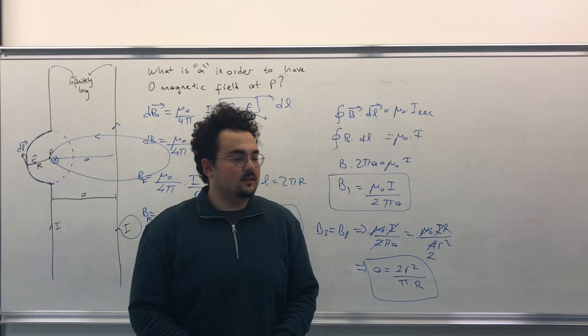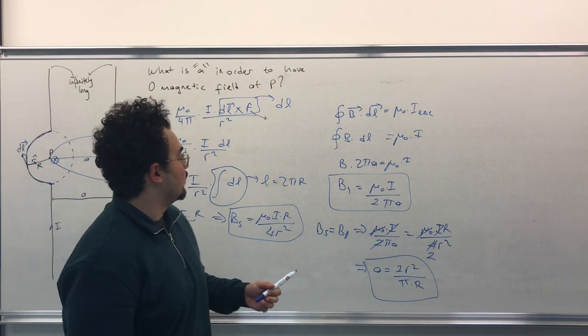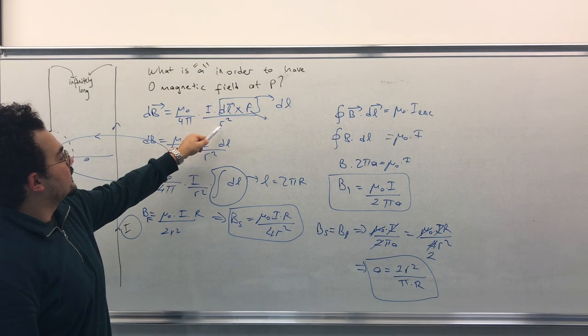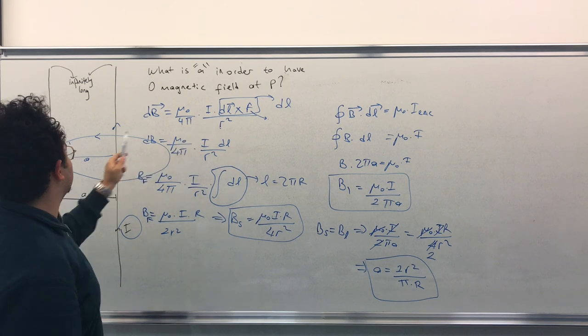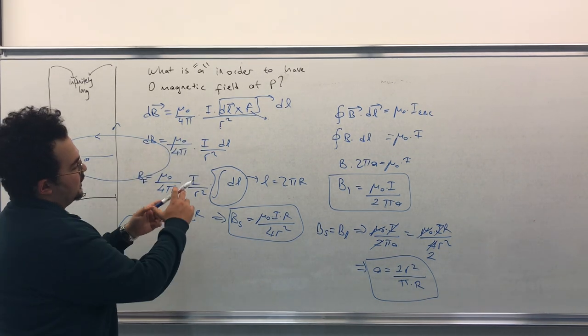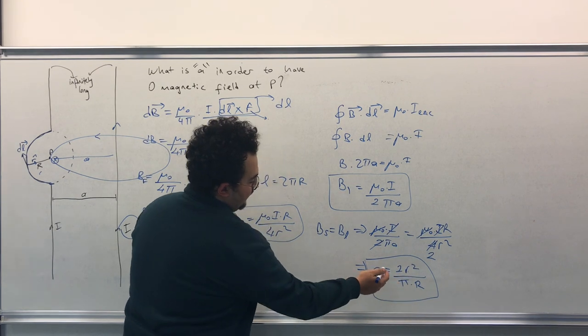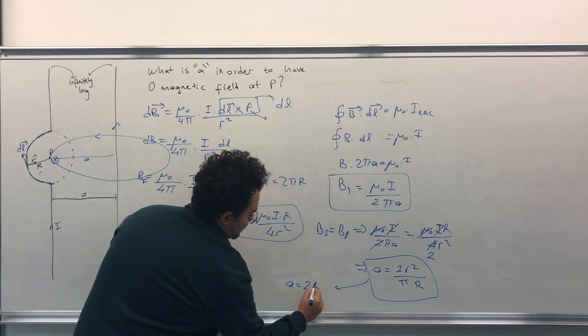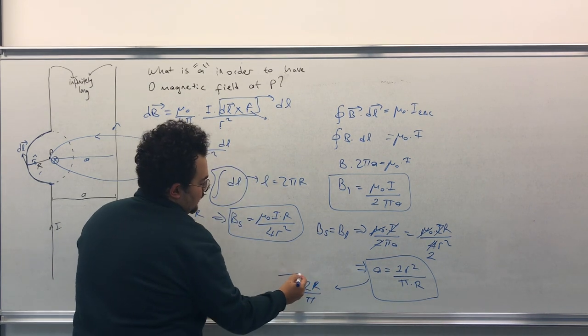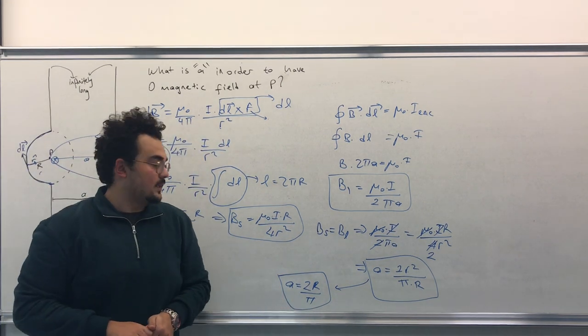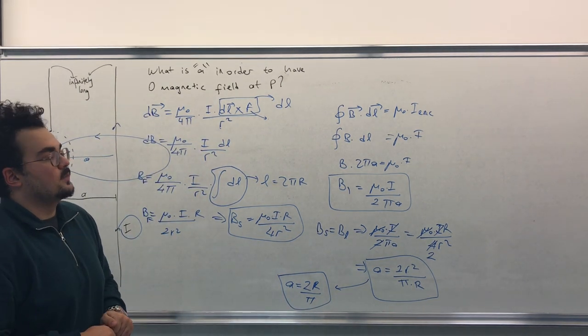So apparently I made a mistake by solving the question. When I wrote the equation I wrote small r instead of capital R here. So I need to change this small r with capital R. So A will be equal to 2r over pi. This is capital R. I made a mistake. Thank you for watching.